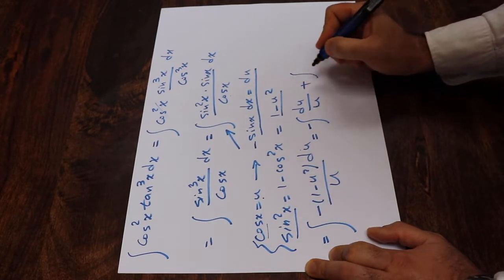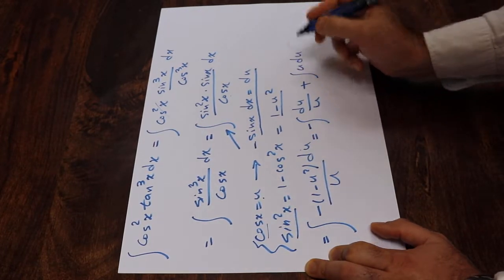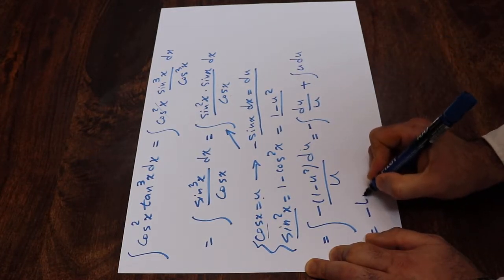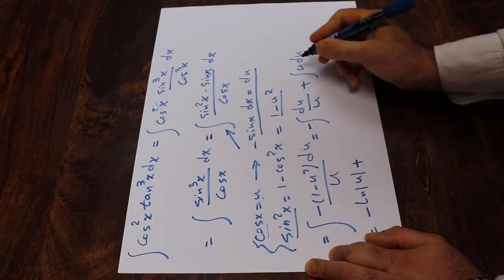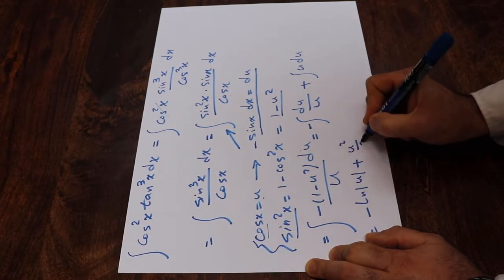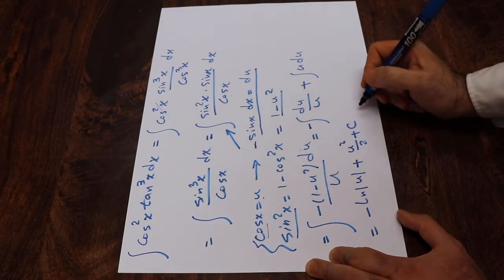And this integral will be equal to minus ln, integral of du over u is ln u, plus integral of u is u with the power of 2 divided by 2 plus c, which is the constant of the integral.